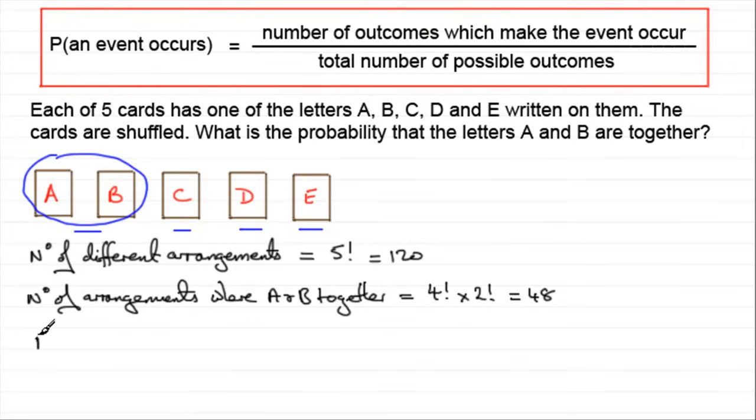So when it comes to the probability that A and B are together then we just use our formula above. So we've got the total number of ways that A and B are together which is the 48 and we divide that by the total number of ways that we can arrange the cards which was 120. So you got 48 out of 120, and if you simplify that you get two fifths. So hope that's given you some idea then, just make sure you remember this formula.